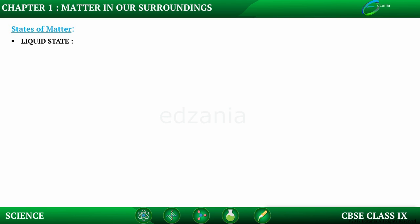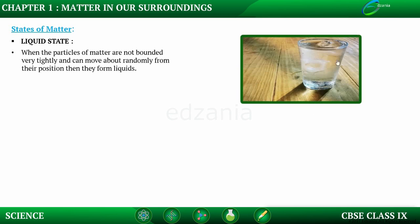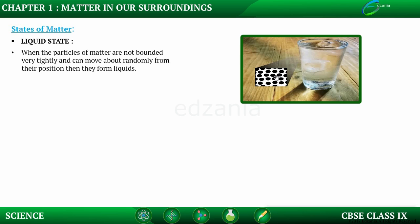When do we define a matter to be in liquid state? When the particles of matter are not bounded very tightly and can move about randomly from their position, then they form liquids. For example, water kept in a glass is liquid state. The microscopic view of arrangement of particles shows that particles have some space in between them — they are not very tightly bounded like in solids — therefore they can move about randomly from their positions.